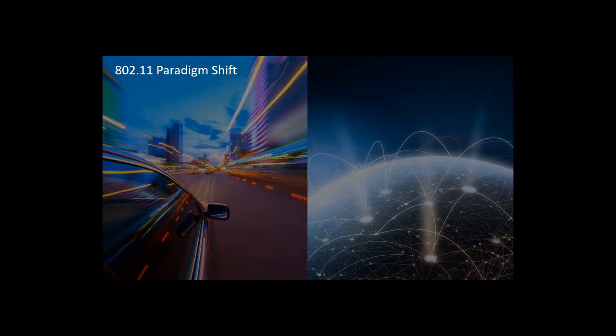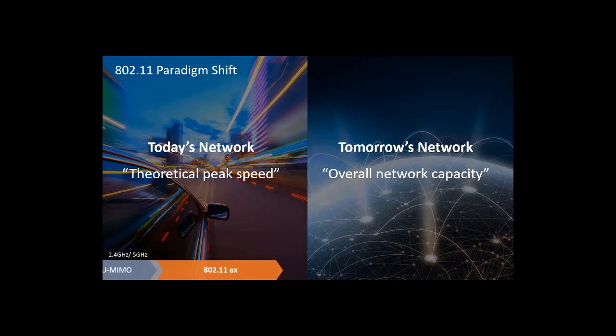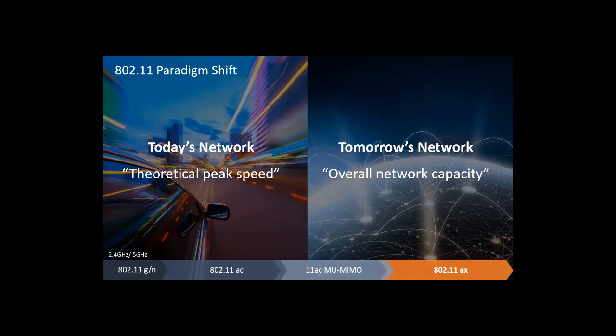In the past, wireless LANs focused on theoretical peak speed. With 11ax, even though speed will increase over 11ac, the emphasis is on overall network capacity and efficiency. 11ax will become prevalent in very dense environments such as urban apartment complexes, college campuses, concert venues, or sports stadiums. The standard is expected to be publicly released in 2019.